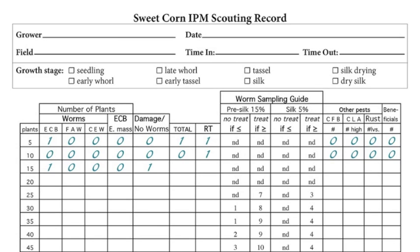In the third set of five plants, you have two plants with damage or larvae — one plant had a European corn borer larva and a separate plant had damage. The running total for all 15 plants is now three. Since we are scouting pre-silked corn, we will use the first two columns to determine if action is necessary. The ND on the form stands for no decision, meaning you have not scouted enough plants to decide whether to treat or not.